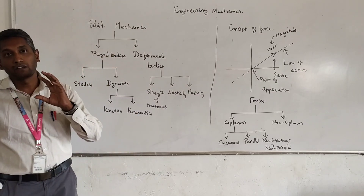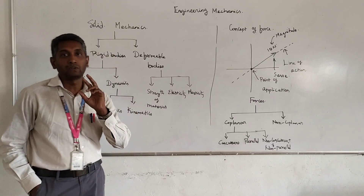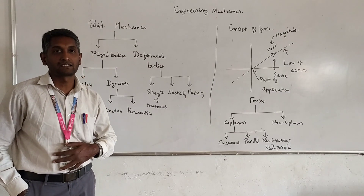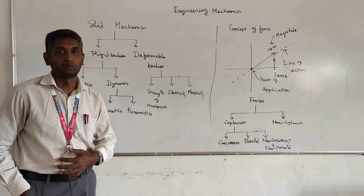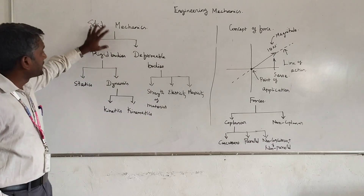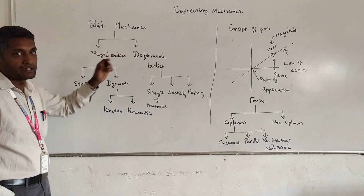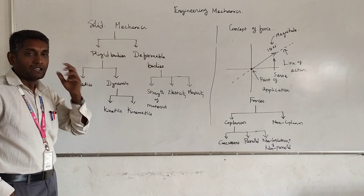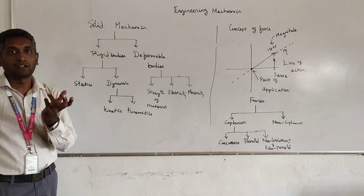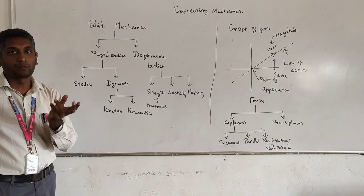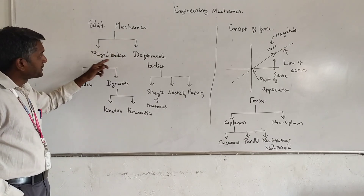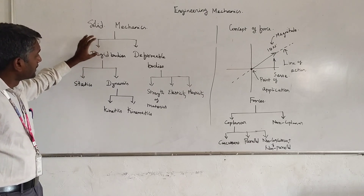Mechanics may be categorized in two aspects: particles and rigid bodies. Mechanics is basically classified as rigid bodies and deformed bodies. The object which is assumed to not get deformed is named as a rigid body.